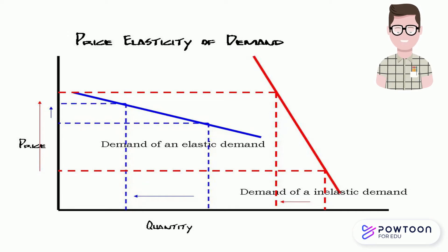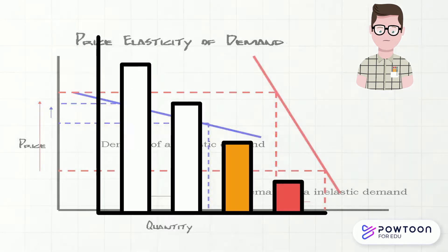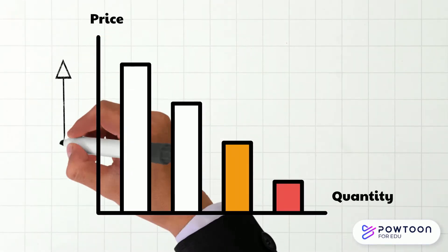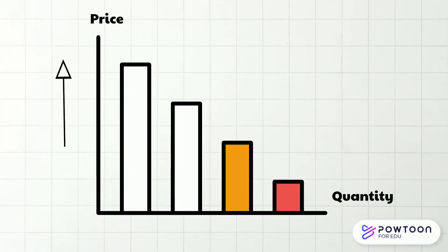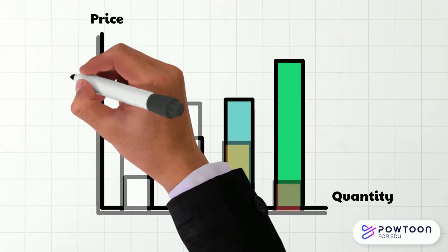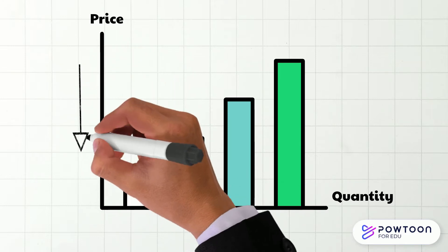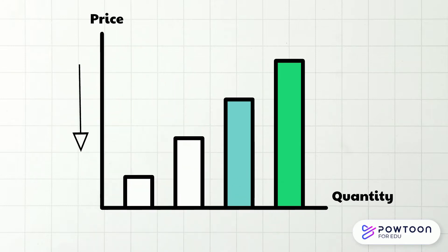The law of demand tells us that when the price of a good or service rises, consumers tend to buy less of it. Likewise, when the price of a good or service falls, consumers tend to buy more of it. However, the law of demand doesn't tell us how much more or less consumers tend to buy.